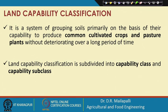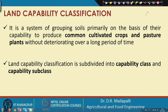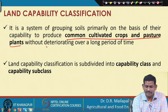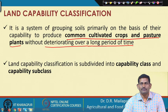The first topic is land capability classification. The term 'capability' refers to crop production — how well we can use the land for producing crops. Land capability classification is a system of grouping soils primarily on the basis of their capability to produce common cultivated crops and pasture plants without deteriorating the cover over a long period of time.